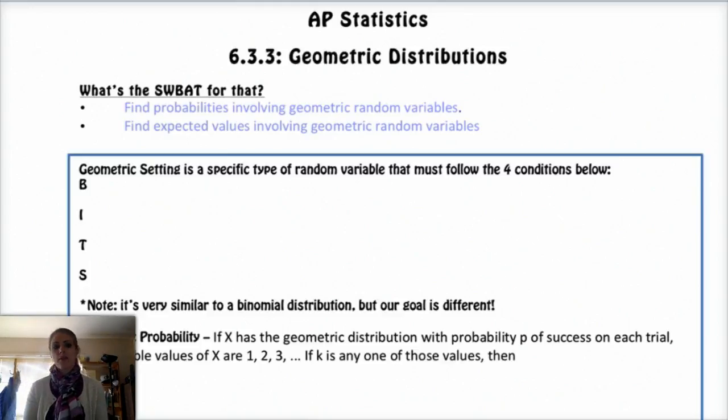We're going to be looking at probabilities of a geometric random variable and expected values for a geometric random variable. Geometric is very similar to a binomial setting. B, I, and S are all the same. Binary has to be success or fail. I, the trials, have to be independent. And S, the probability of success, has to be the same from trial to trial. So all of that is exactly the same.